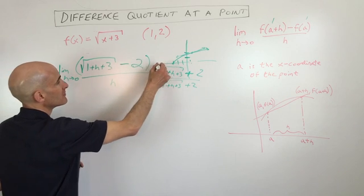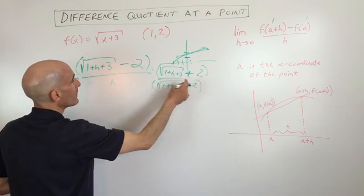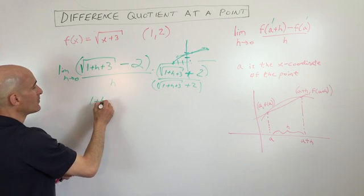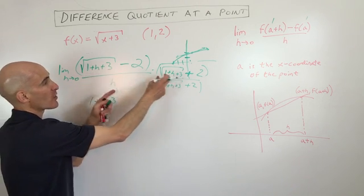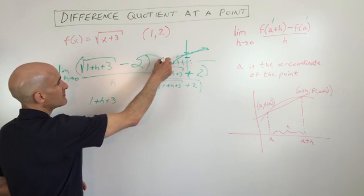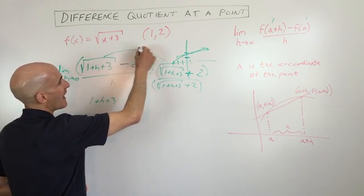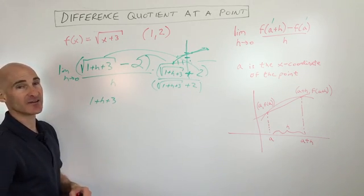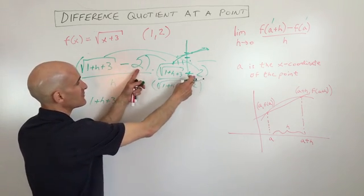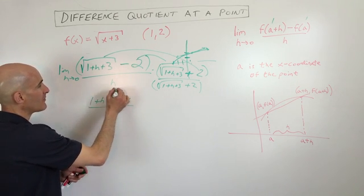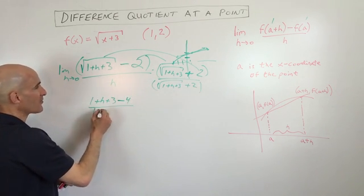So what we're going to do is we're going to distribute or FOIL. So we've got the first term and the first term. That's just going to give us one plus h plus three. Whenever you multiply a square root times itself, you just get what's underneath. Now the inside terms and the outside terms, those are going to cancel because one's positive and one's negative. And then the last term, we have a negative two times a positive two, which is a negative four.